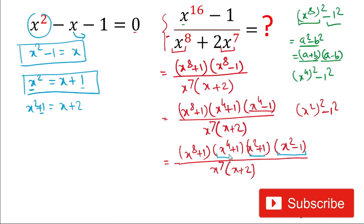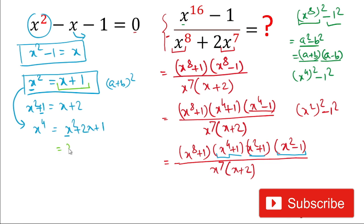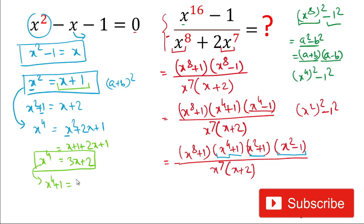Now we need x⁴ + 1. We square x² = x + 1 to get x⁴ = (x + 1)² = x² + 2x + 1. Substituting x² = x + 1, we get x⁴ = (x + 1) + 2x + 1 = 3x + 2. Adding 1 to both sides, x⁴ + 1 = 3x + 3.